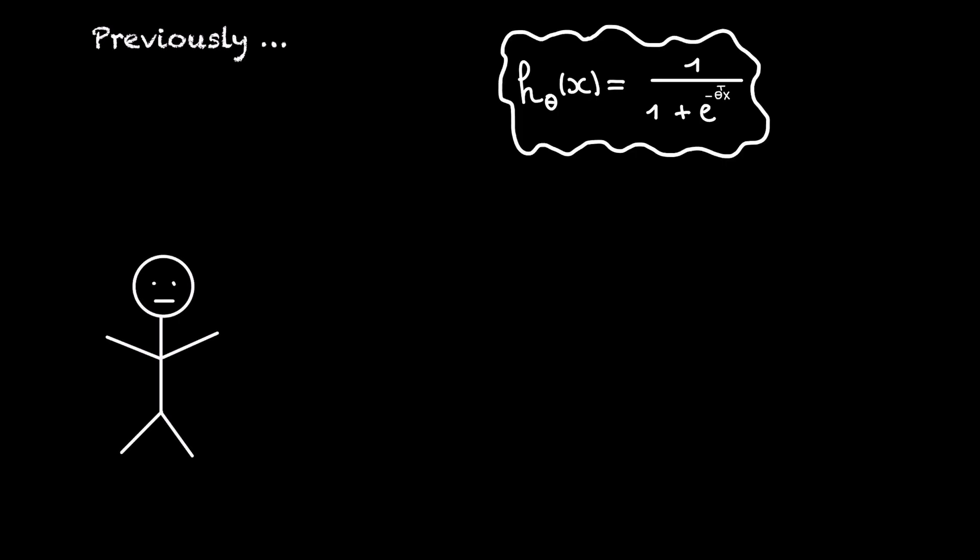Previously, we saw that the hypothesis of logistic regression looks as follows, and that the value of the hypothesis gives us the probability that the given input example belongs to the positive class.